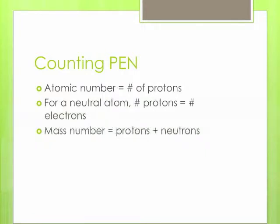Let's talk about how to count protons, electrons, and neutrons — frequently abbreviated as P, E, N. The atomic number tells you the number of protons. And remember that if we're talking about an atom, it's going to be electrically neutral. So if it has 26 protons, it has to have 26 electrons, so that each positive is balanced out by one negative. The mass number is the number of protons plus neutrons. It's really important that you understand that mass number and average atomic mass are not the same thing. The mass number is the protons and neutrons for one atom, one isotope. The average atomic mass is the average of the mass of all the isotopes.